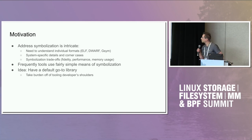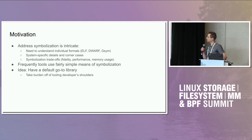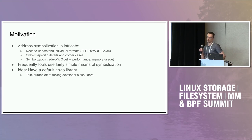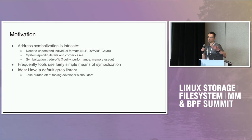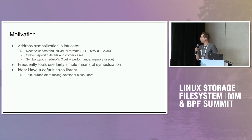There are also additional system-specific details and corner cases you would have to deal with, and it gets cumbersome if everybody does that. There are also trade-offs to be made as part of the symbolization process itself — for instance, if you think about inlining functions and whether you want to consider all possible locations where a function got inlined. That information is in DWARF but may require additional memory. There's also an inherent trade-off between performance and memory usage, how much you cache. The proposal we are making is to provide a couple of knobs that a tooling developer can adjust, as opposed to having to reimplement an entire caching scheme.